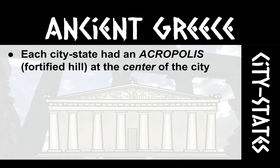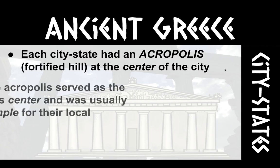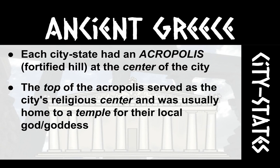Even though each city-state was independent, they did have some similar features. The city-states always included a city and the surrounding villages, fields, and orchards — whether they're growing grapes or olives. Each city-state had a marketplace, an agora, at the center of the city. Not only did people go there to buy and trade food, it also served as a meeting place where men would come together and talk about ideas regarding government and philosophy. Each city-state also had an acropolis — a fortified hill — usually at the center, where government buildings and religious buildings were located, with a large temple at the top built in honor of the local god or goddess.